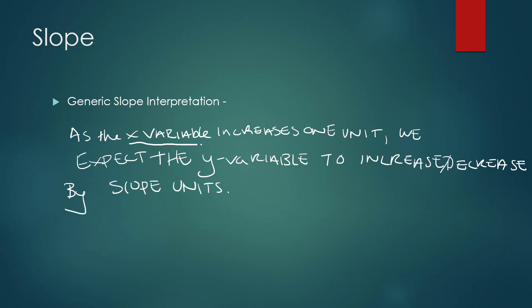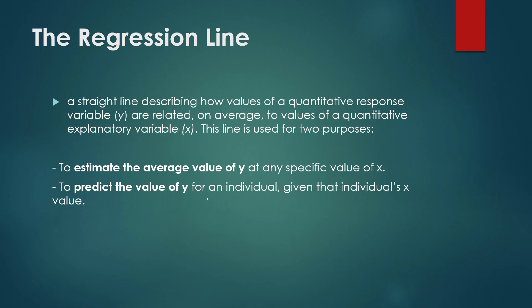We'll practice interpreting slope, but generically this is a paint-by-numbers approach where you would be specific as to what the x variable was and state its units. It's always 'increases one' for x. We'll also state what the y variable is, whether it increases or decreases depending on the sign of slope, and then be specific as to the numeric value of slope and its units.